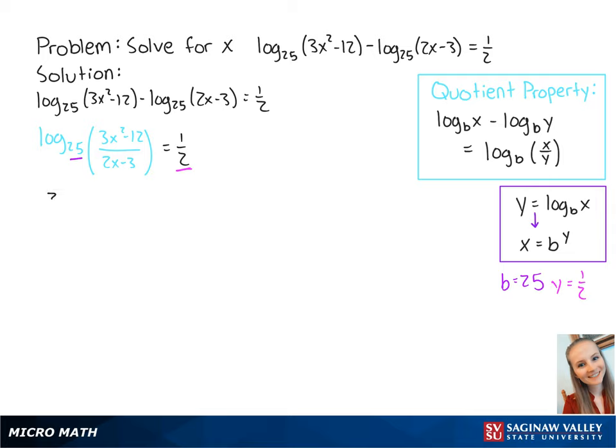So the equation becomes 3x squared minus 12 over 2x minus 3 equals 25 to the half power.